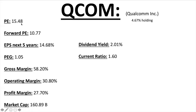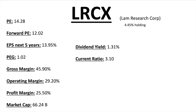Qualcomm is one of my favorites with just under 5% holding in the ETF. PE ratio 15.48, Forward PE 10.77 — projected earnings supposed to be higher than the last four quarters. EPS next five years about 15% — divide that from the PE and you get just over one, which is fantastic. Gross margins are high, operating margins are high, profit margin 27.7% — right in that excellent section over 20-25%. Market cap $160.89 billion, 2% dividend, current ratio 1.6.